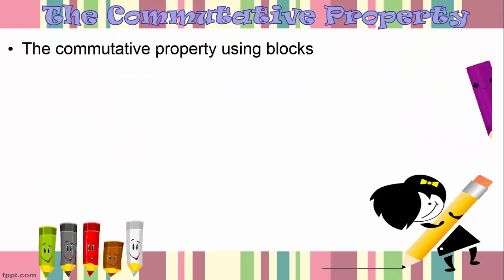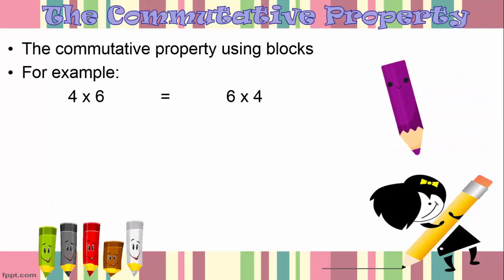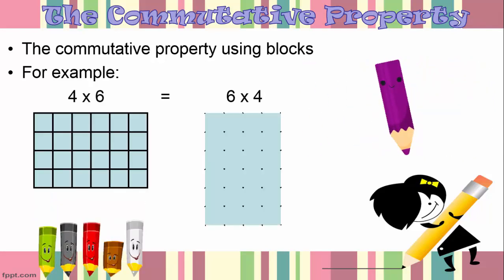The commutative property using blocks: for example 4 times 6 is equal to 6 times 4 so however which way we arrange the block it doesn't matter. So here we'll have 6 on the top by 4 and here we'll have 4 on the top by 6 and it's the same area with the same number of units.